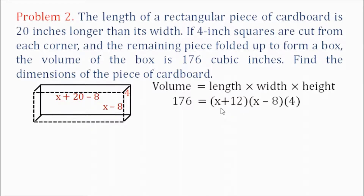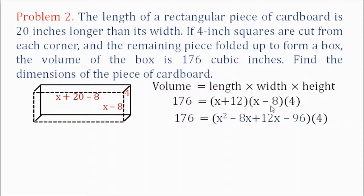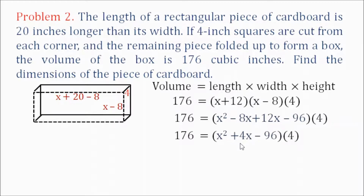First we multiply the two binomials — the quantity x plus 12 times the quantity x minus 8 — using the FOIL method. x times x is x squared; x times negative 8 is negative 8x; 12 times x is 12x; 12 times negative 8 is negative 96. Combining negative 8x and positive 12x gives x squared plus 4x minus 96. Multiplying all terms by 4, we get 176 equals 4x squared plus 16x minus 384. Now we have a quadratic equation.